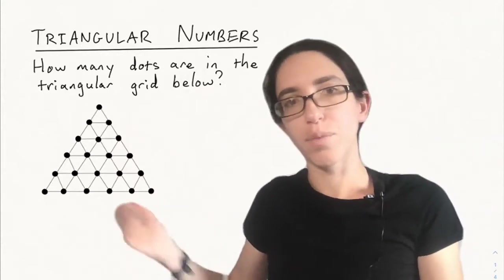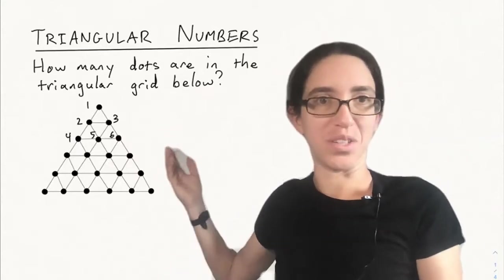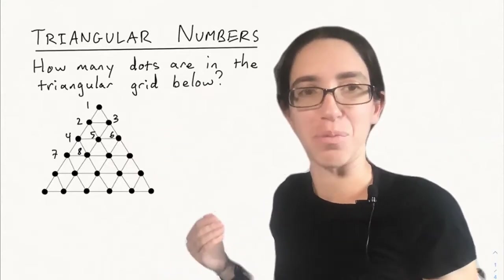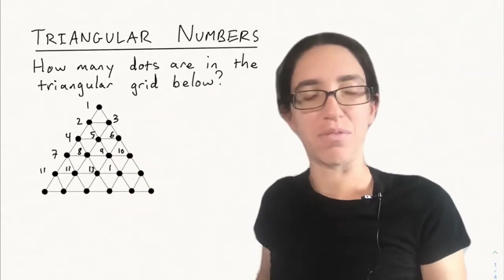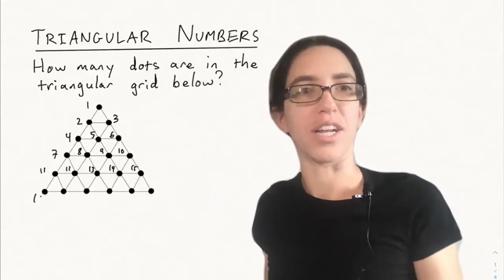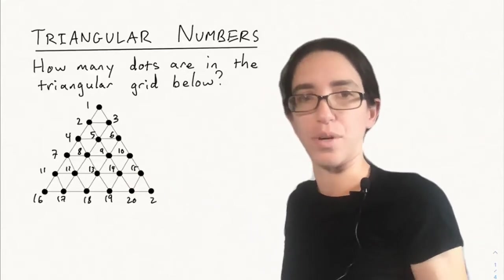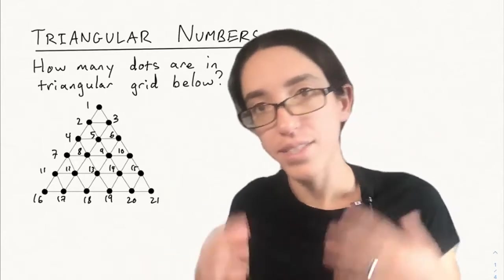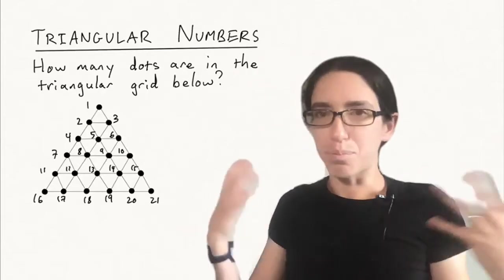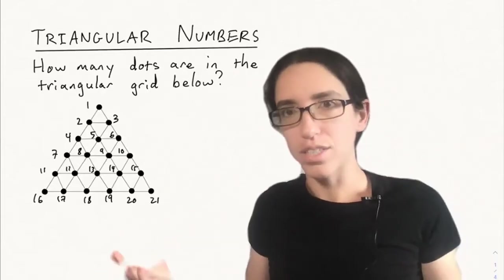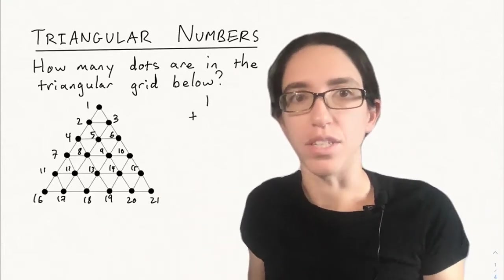So there's a number of ways to approach this. One is to just count them. As you see the numbers one, two, three, four, five, six are appearing on the dots. This is how you might count them, left to right in each row is a good way to organize it. We're at 16, 17, 18, 19, 20, 21. So that's a bit of a laborious way of counting them, but certainly you can do it for this size. But what if it's a bigger triangle? We might want an efficient way of computing how many dots are in such a triangular grid.